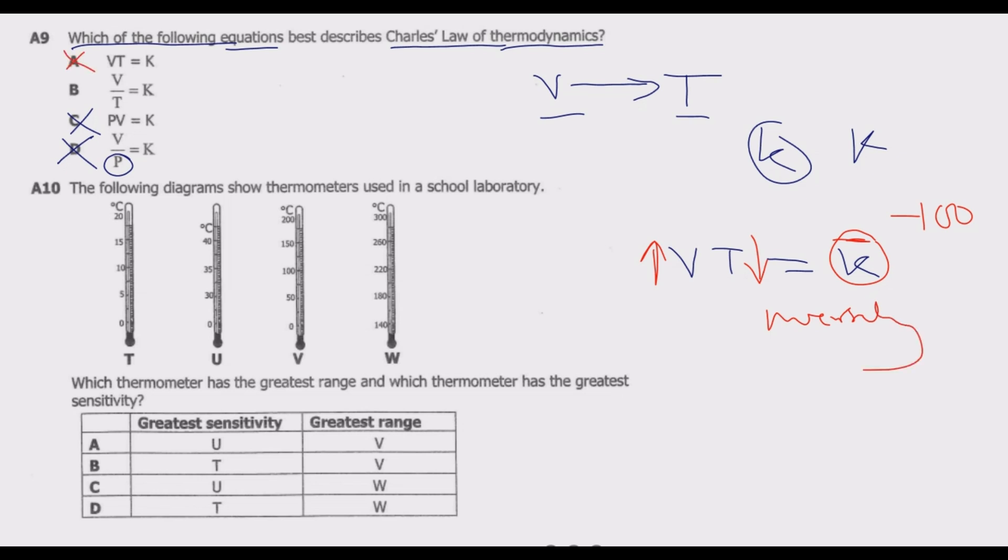We remain with B. So is B true? V over T equals constant. If V increases to maintain k constant, T must increase. For example, if V was 100 and T was 20, that's 5. So if V increases to 200, for us to maintain this to be 5, T must increase to 40. This is basically a direct relationship, so B is the correct answer.